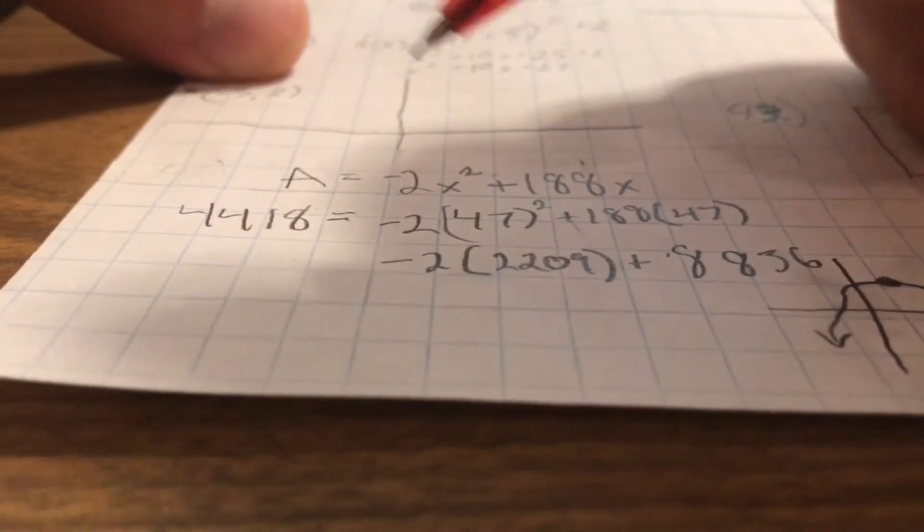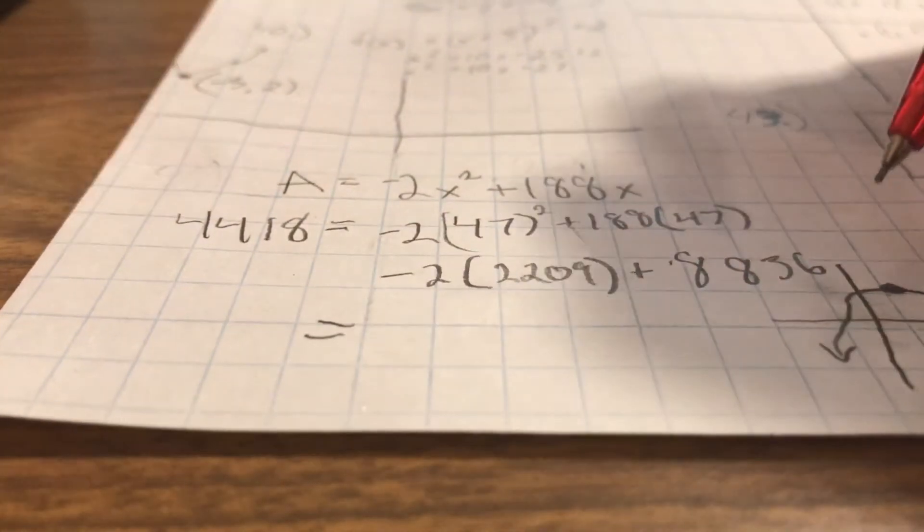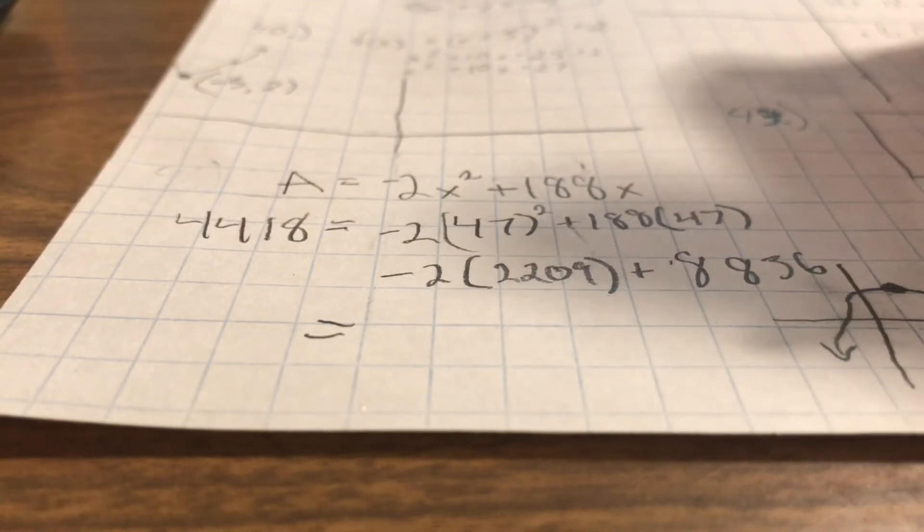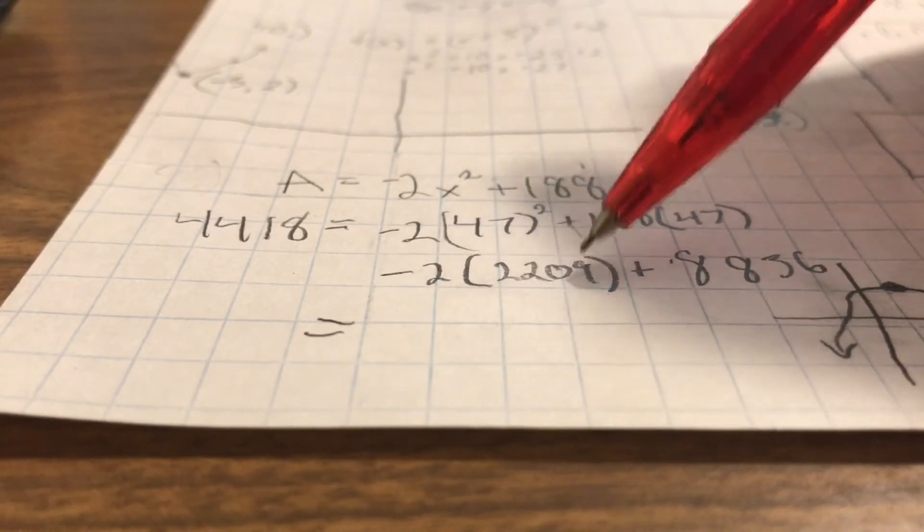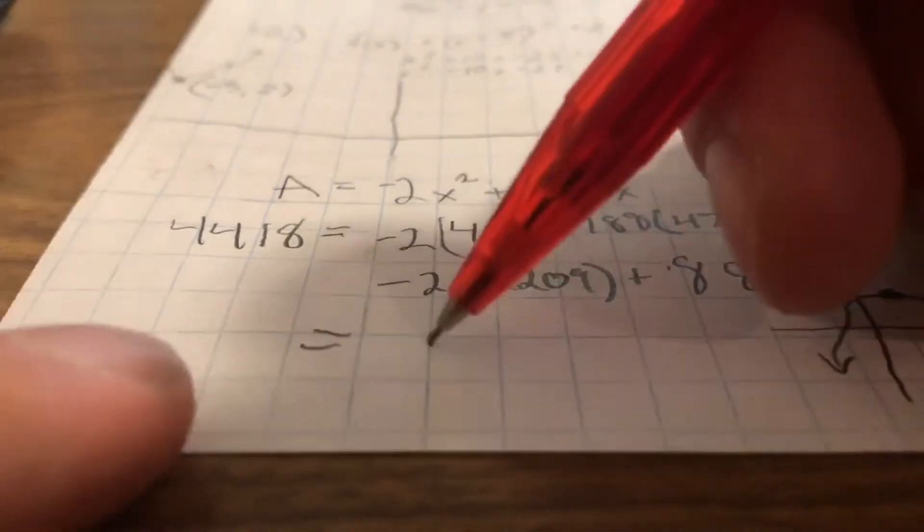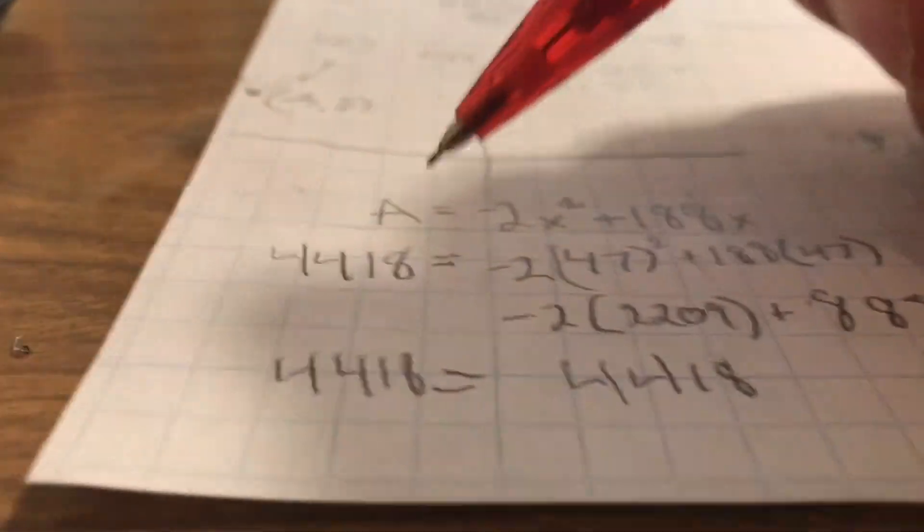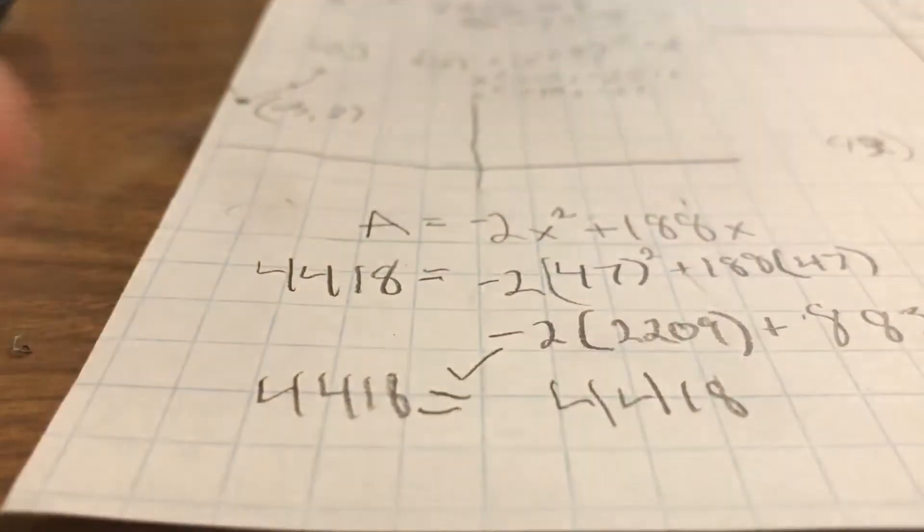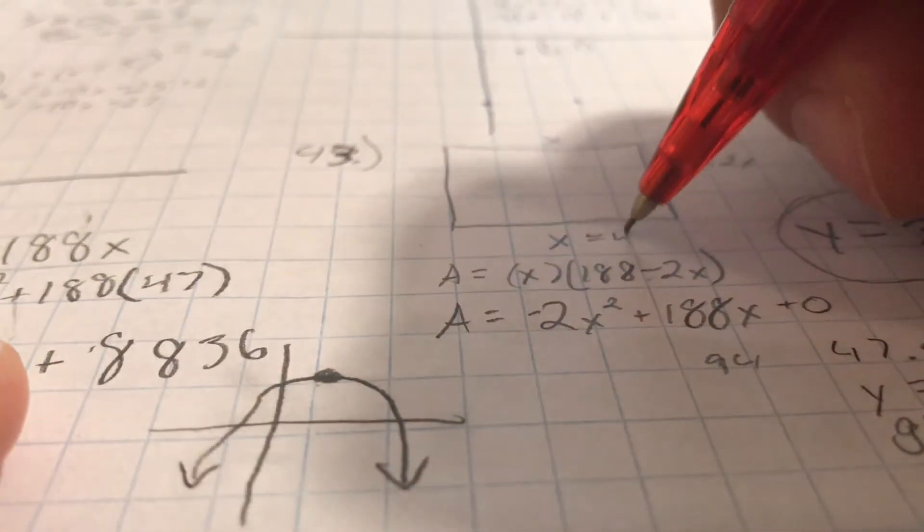So I'm going to write negative 2 times 2209 plus, and then I'm going to use my calculator, 188 times 47. It's going to give me 8,836. So from here, we know pretty much how to do this. So we're going to be subtracting this from this. 4,418 gives me 4,418. And both of those are equal to each other. So we know that that point definitely lies within our graph here.